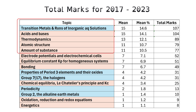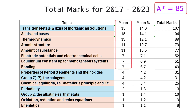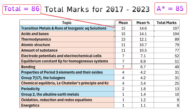If we focus back on those grade boundaries, the average score on Paper 1 out of 105 needed to get an A* was 85. If we look at these topics here, their average total comes to 86. So in a sense, if you really prioritise the revision of these eight topics, that would on average have been enough to get an A* across all Paper 1s without picking up any marks on the other topics at all.